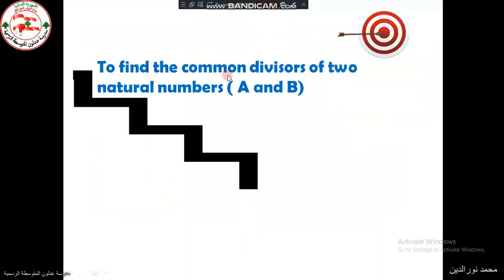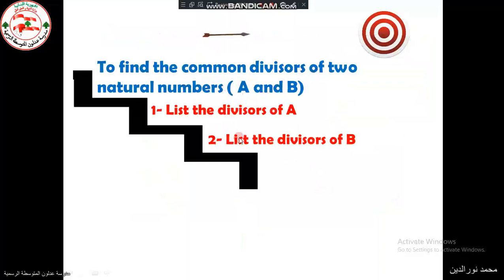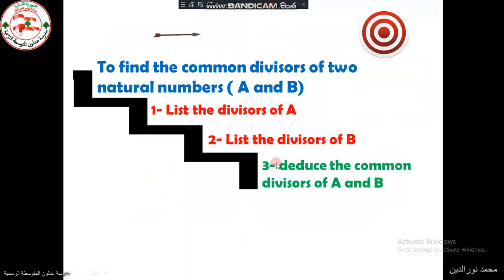How to find the common divisors of two natural numbers A and B? First, we have to list the divisors of A, then list the divisors of B, and then we deduce the common divisors of A and B.